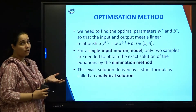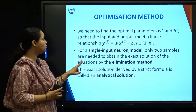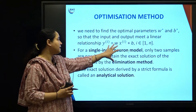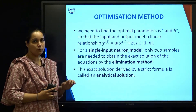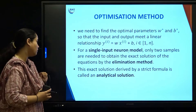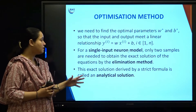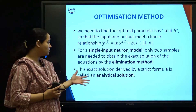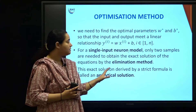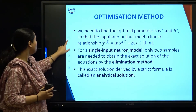If it is a single neuron, single input neuron model, then only two samples are sufficient to obtain the exact solution. You could use the elimination method and get an optimal solution. This exact solution is derived by a strict formula, which we call an analytical solution — but that is only the case for a single input neuron, and practically it is not possible.